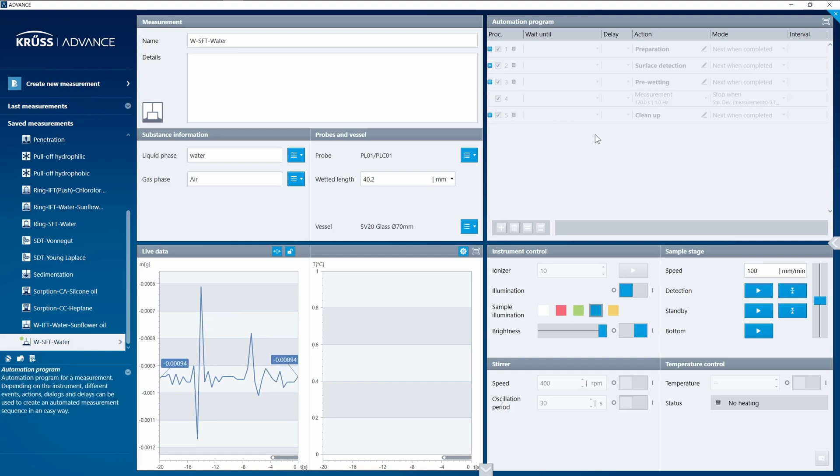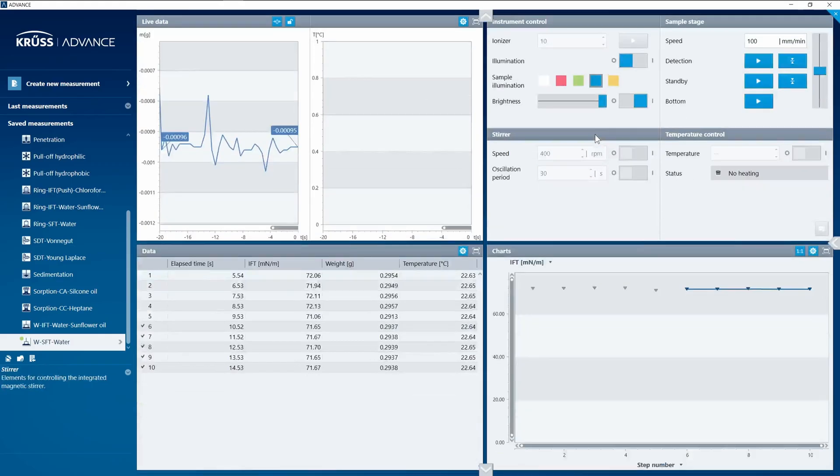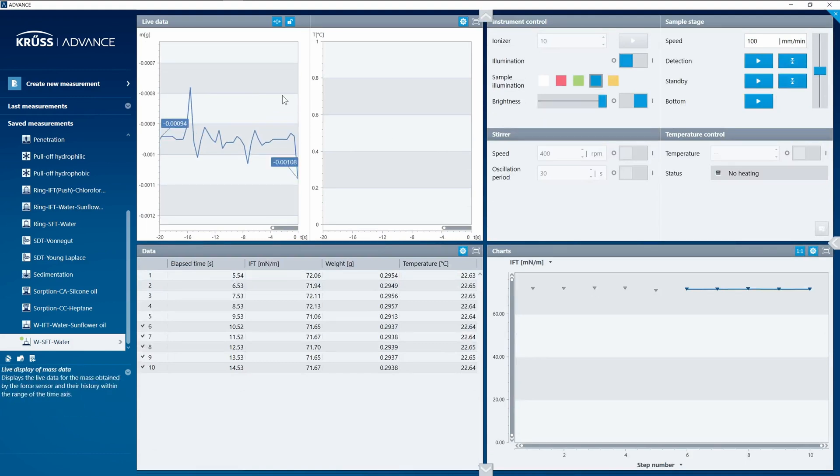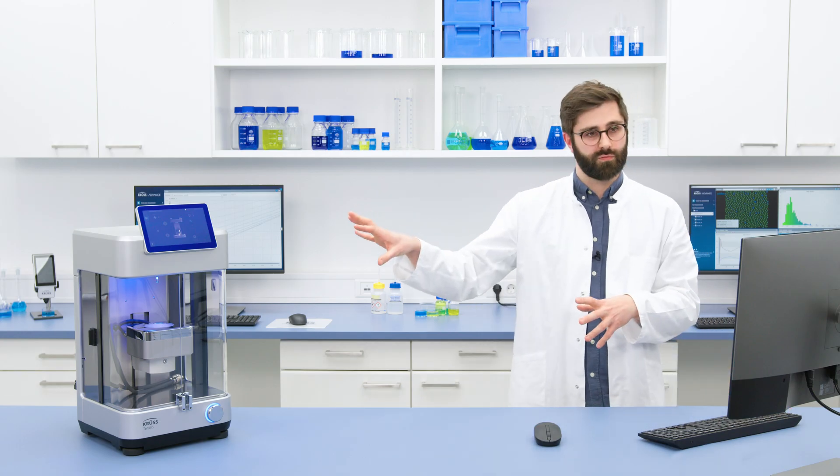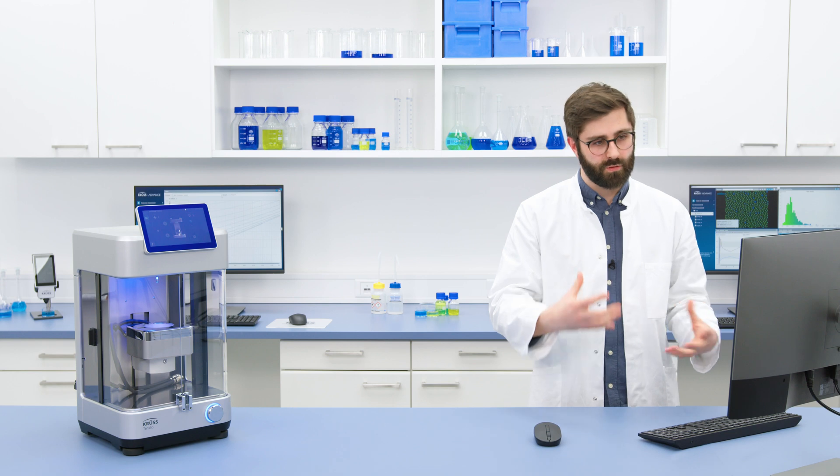Then you move to the right and you work your way down through the automation program, which tells the instrument how it should measure. You have a readout of the live data here, and on the right side here you have all of the controls that you saw before on the touchscreen. So you can control all the different functions of Tensio directly from the software as well.